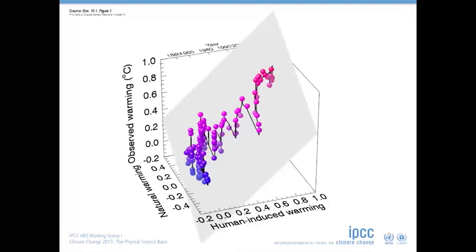The models, on average, appear to be getting the size of the response to human influence about right, but they appear to be overestimating the response to natural factors.